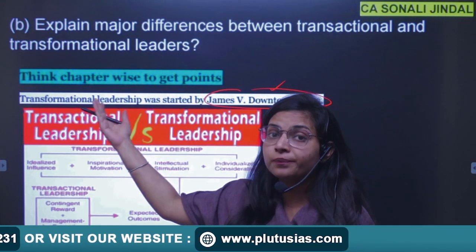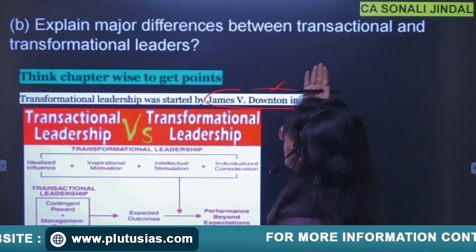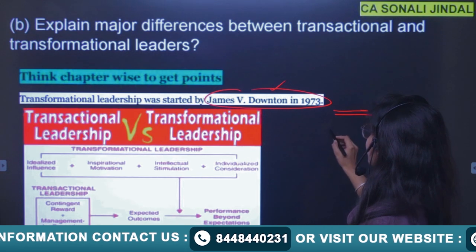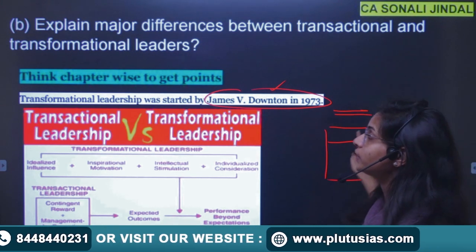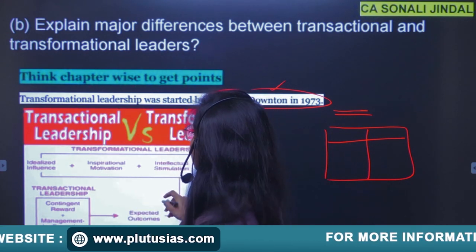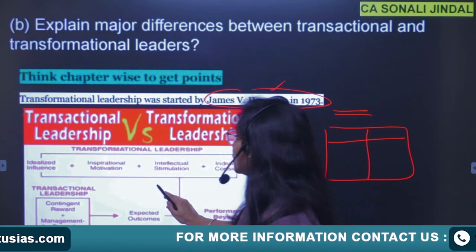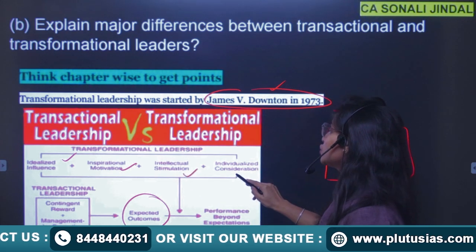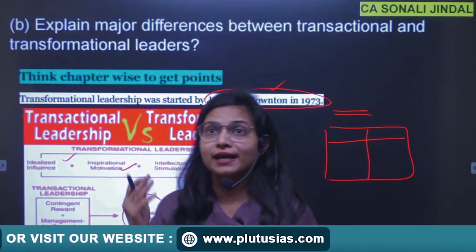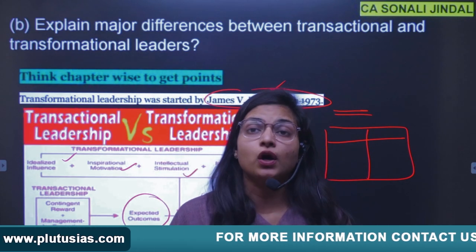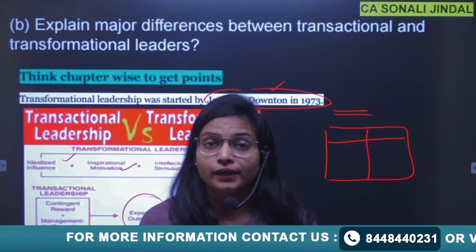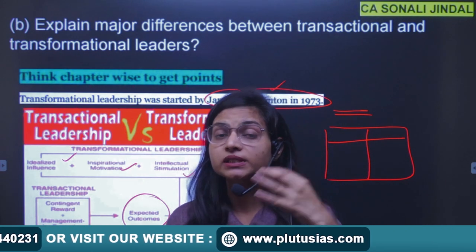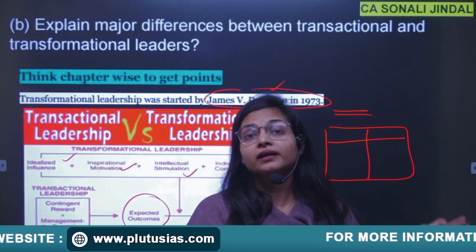In this question, start by defining leadership, or you can start by defining transactional and transformational leadership in two lines as an introduction. Then make a chart to show the differences, and show with a diagram that transformational leadership goes beyond expected outcomes because it adds idealized influence, inspirational motivation, intellectual stimulation, and individualized consideration. Since this has been asked in previous years, the specific content should be prepared in advance.